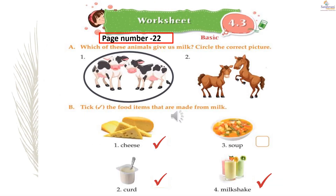Now we are proceeding to worksheet 4.3 on page number 22. Part A: which of these animals gives us milk? Circle the correct picture. The horse or the cow? Cows give us milk, so circle the cow. Part B: tick the food items that are made from milk. Tick on cheese (number 1) and curd (number 2). Cross on soup (number 3) — soup is made from vegetables, not milk. Tick on milkshake (number 4).